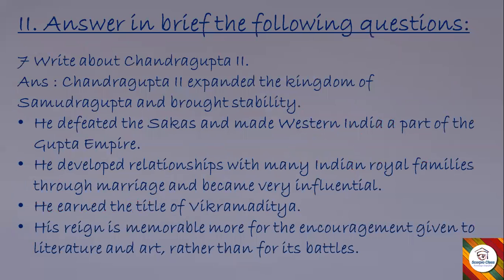Moving to the second section, answer in brief. Question seven: write about Chandragupta II. Answer: Chandragupta II expanded the kingdom of Samudragupta and brought stability. He defeated the Sakas and made western India a part of the Gupta Empire. He developed relationships with many Indian royal families through marriage and became very influential. He earned the title of Vikramaditya. His reign is memorable more for the encouragement given to literature and art rather than for its battles.